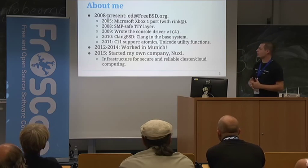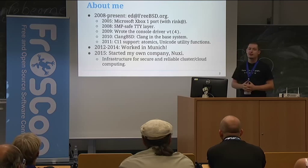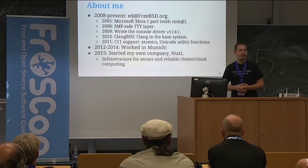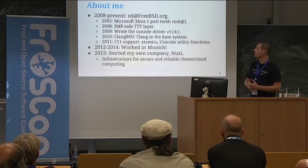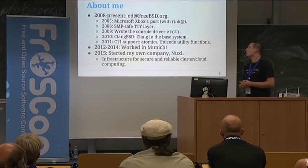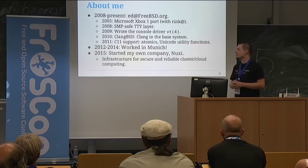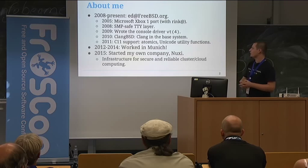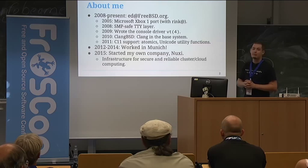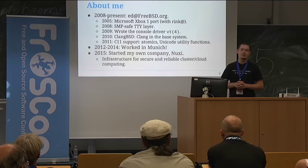Later on, I started working on ClangBSD. Back in 2010, some people at LLVM started working on a new compiler frontend called Clang. Back then, almost nobody was using it. Apple was developing it internally and they recently open sourced it. I thought this was really nice — having a BSD-licensed compiler infrastructure in a BSD-licensed operating system would be a really good idea. So back in 2010 I started working on this, and eventually Clang became the default compiler in FreeBSD for most of the interesting architectures.